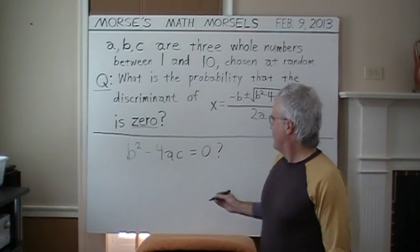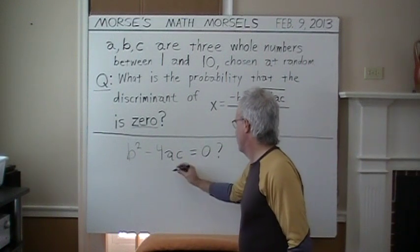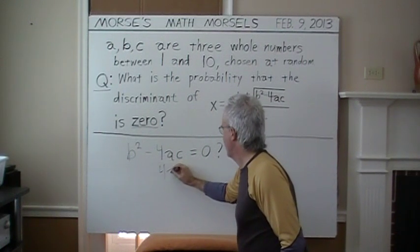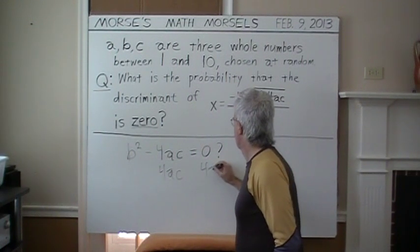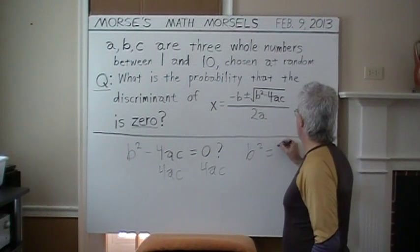Okay, for B squared minus 4AC equals zero, just add 4AC to each side, and you'll get B squared equals 4AC.